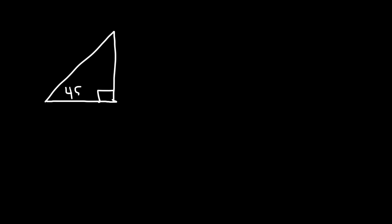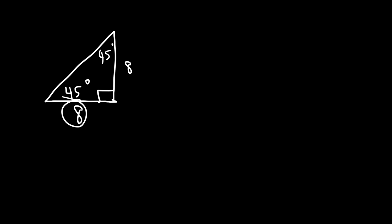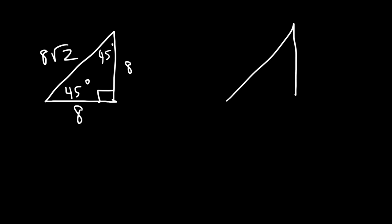Consider this right triangle where you're given the length of one leg. Since it's a 45-45-90 triangle, both legs must be equal, so if the bottom leg is 8, the other leg is also 8. To find the hypotenuse — always the longer side — we multiply by the square root of 2, giving us 8√2.